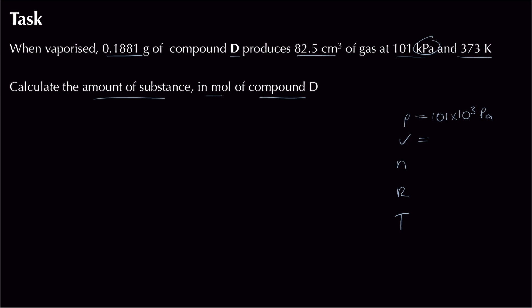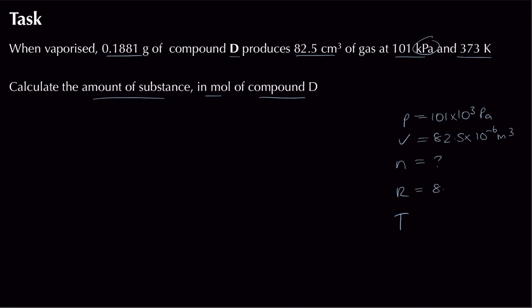Volume is given in cm³, so we divide by 1,000,000 to get metres cubed: 82.5 × 10⁻⁶ m³. Moles is what we're calculating. R = 8.314 J K⁻¹ mol⁻¹, and temperature is already 373 K — no conversion needed. You get a mark here for correct unit conversions.